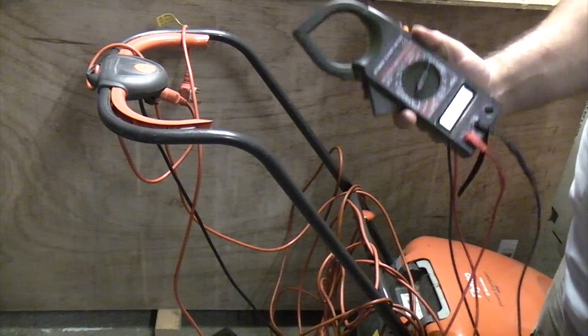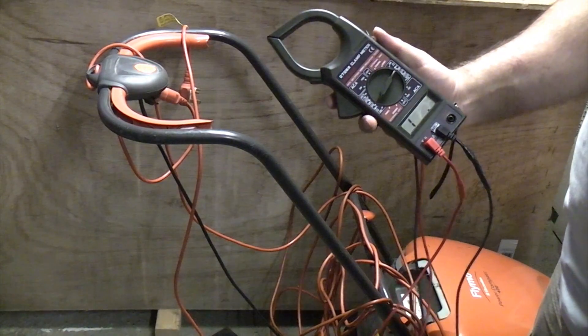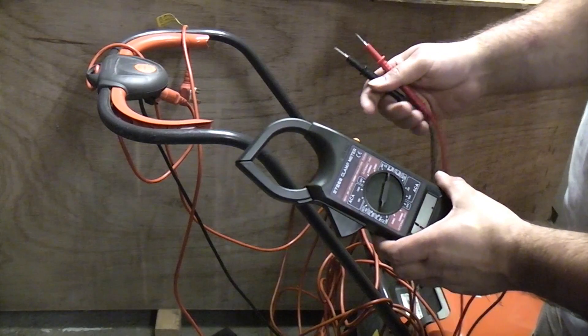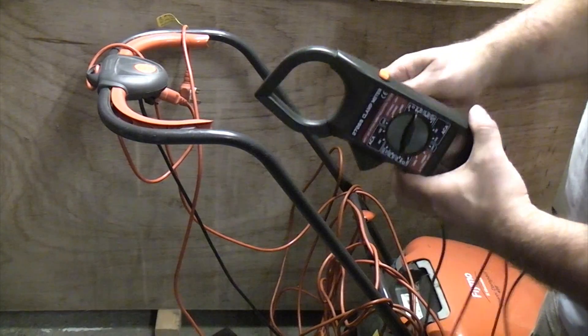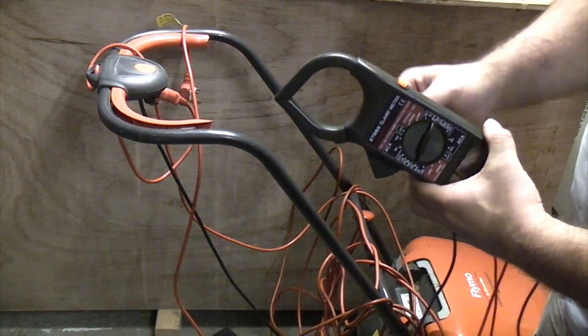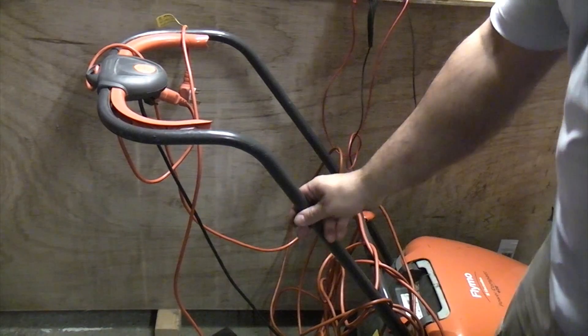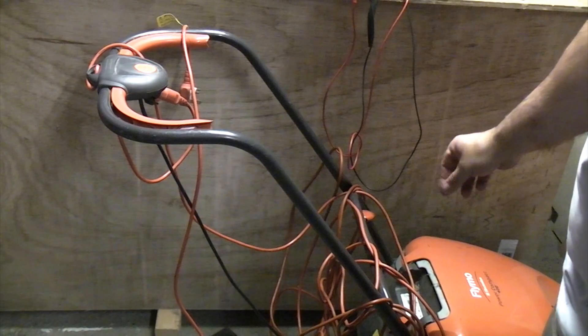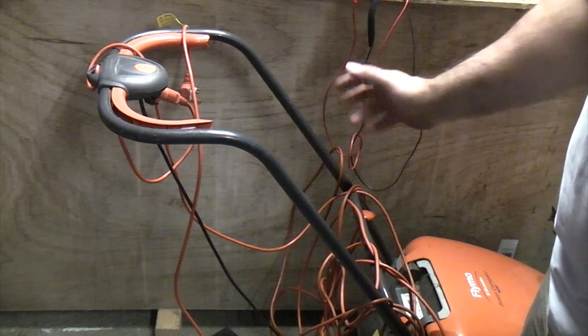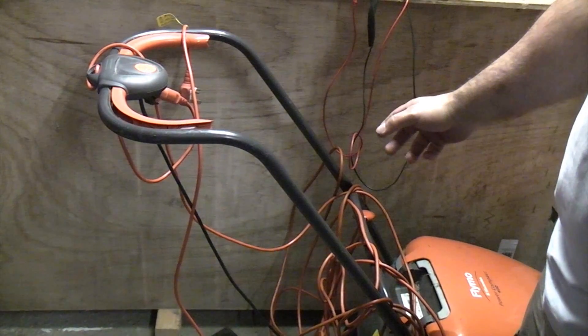So for locating an electrical fault, a multimeter like this with a continuity test on it with the beep function is extremely useful. We've got a lawnmower here that stopped working, so we're just going to do a bit of fault finding now and we're just going to try and determine exactly where the fault is.